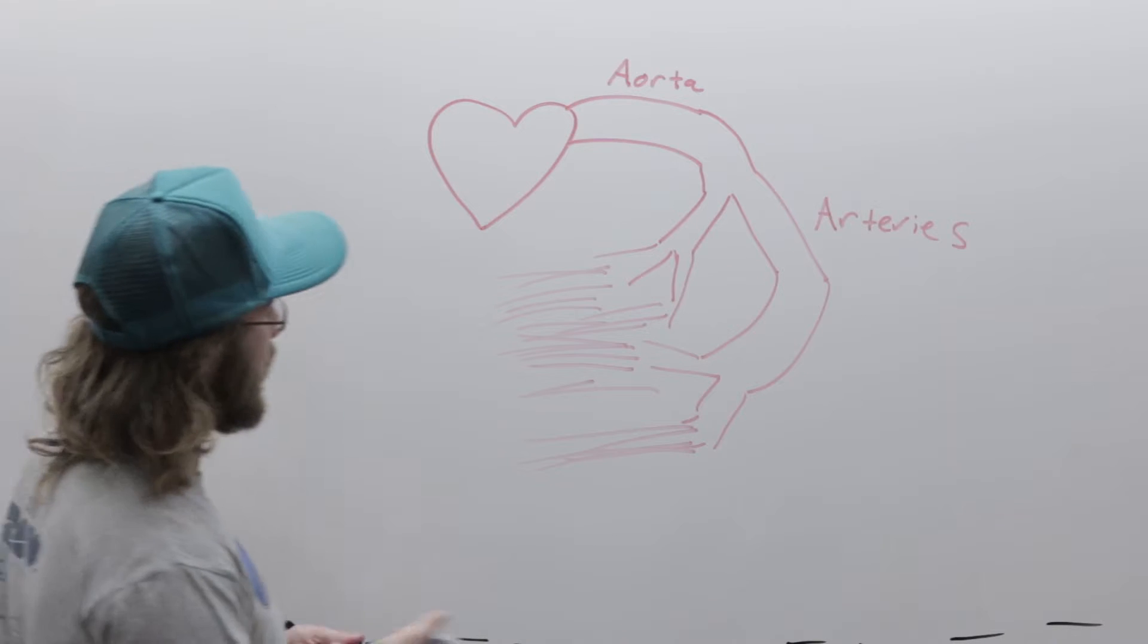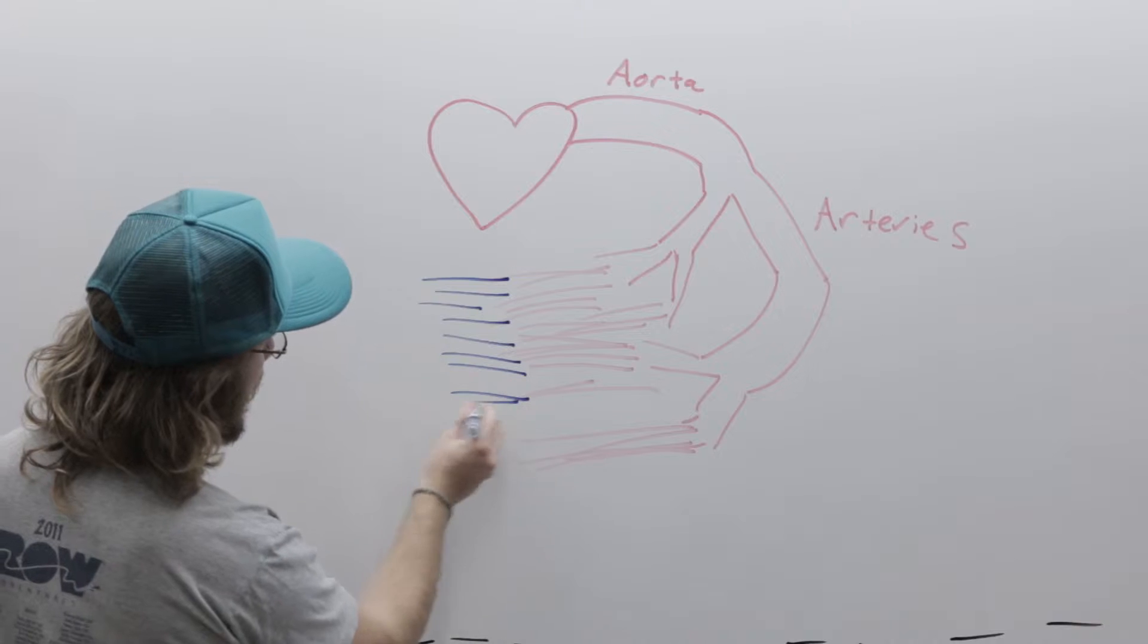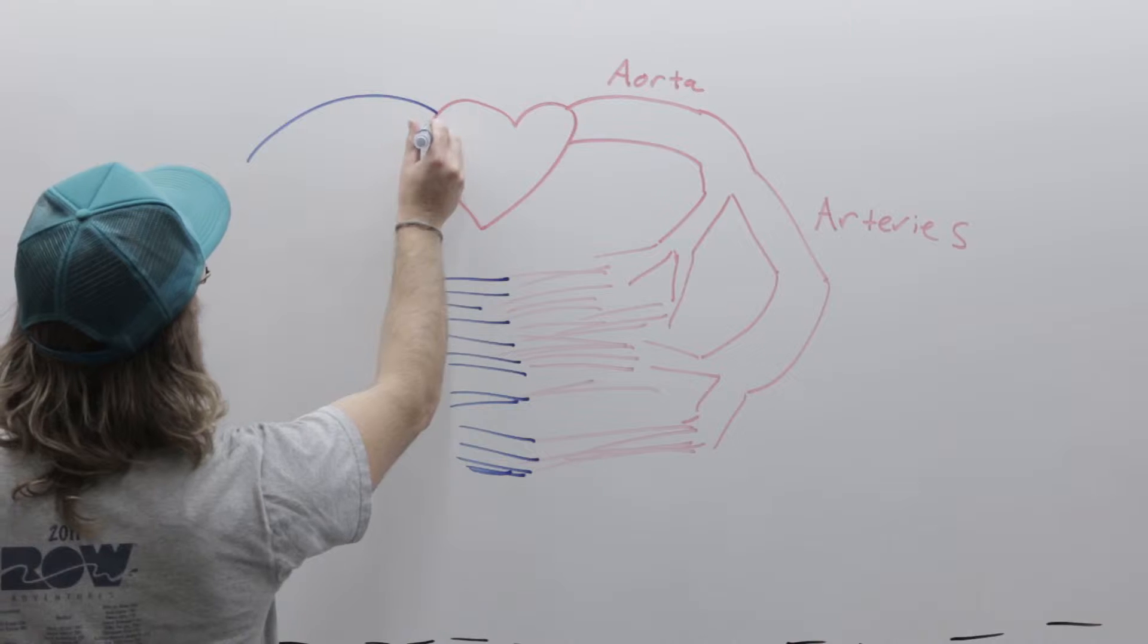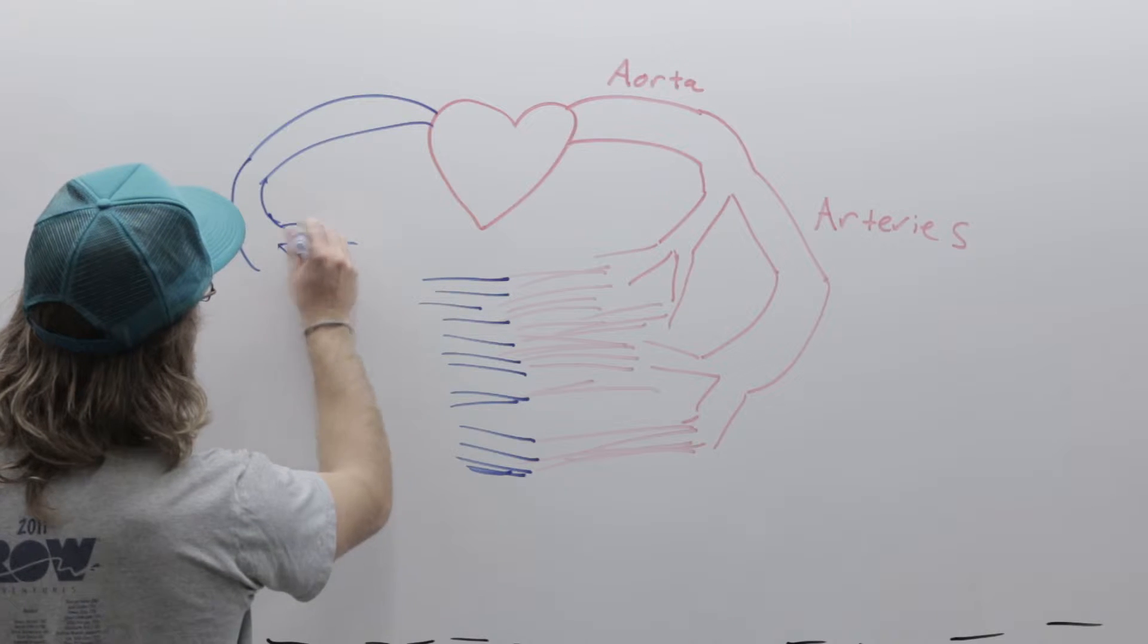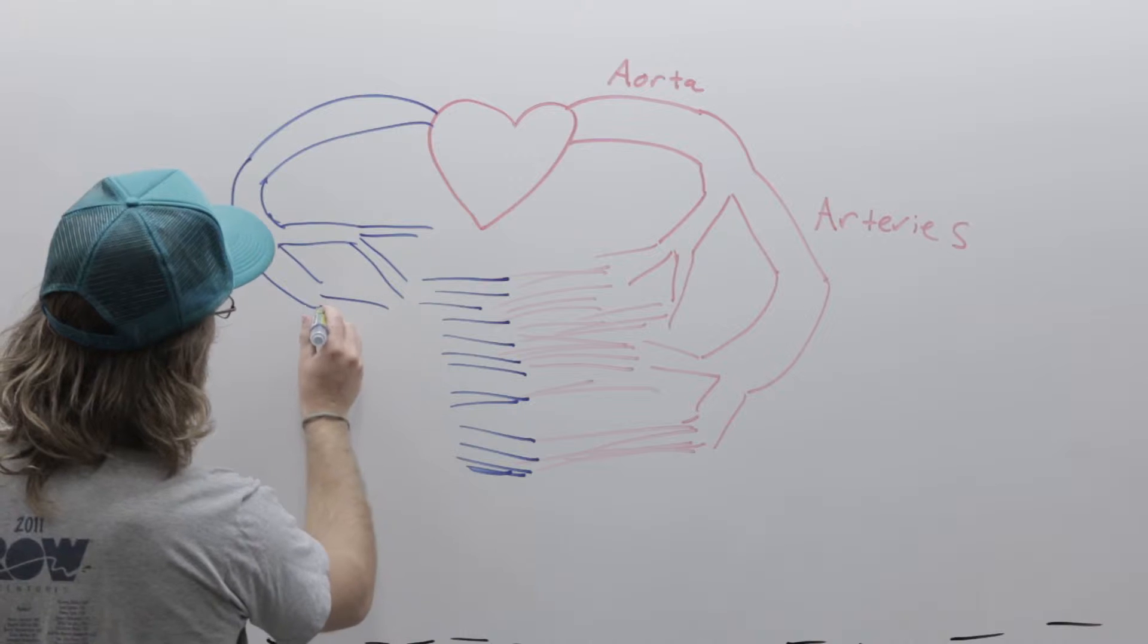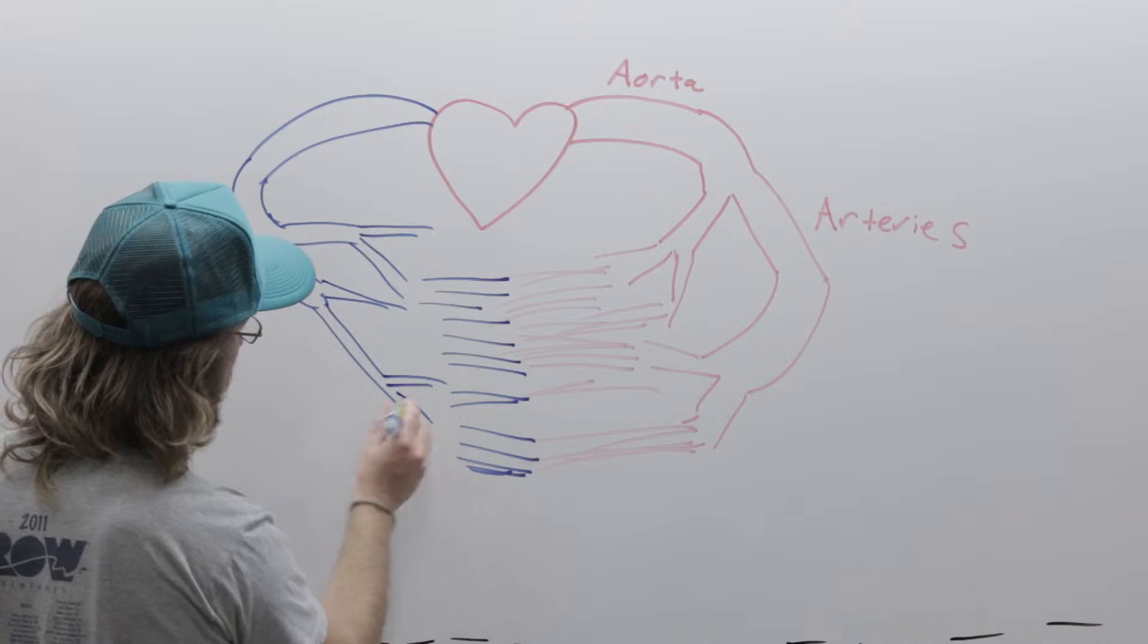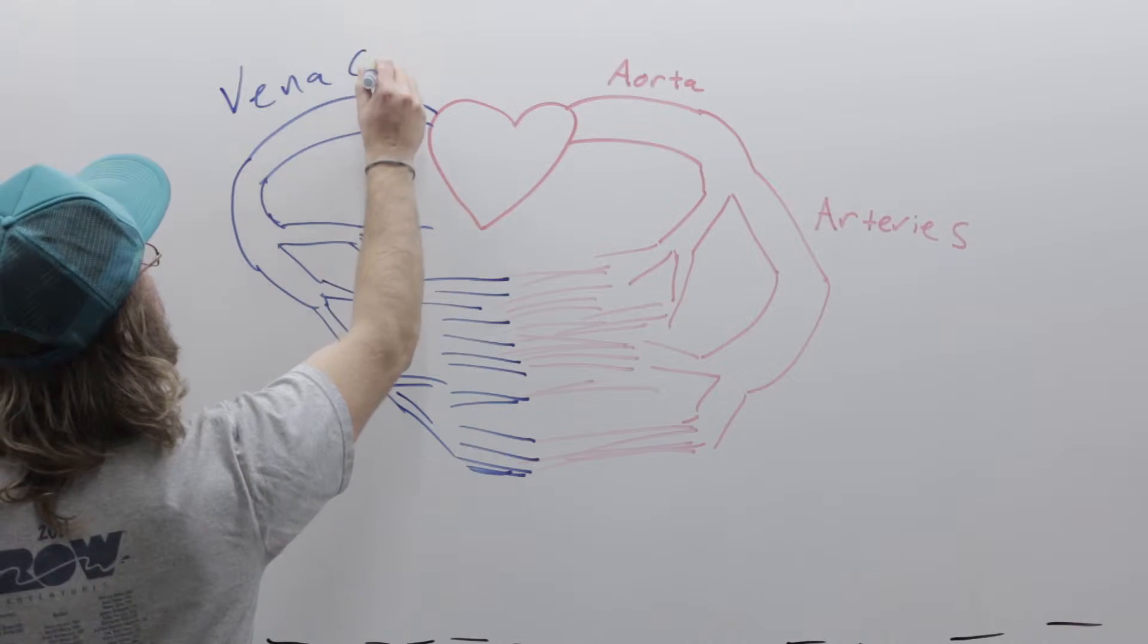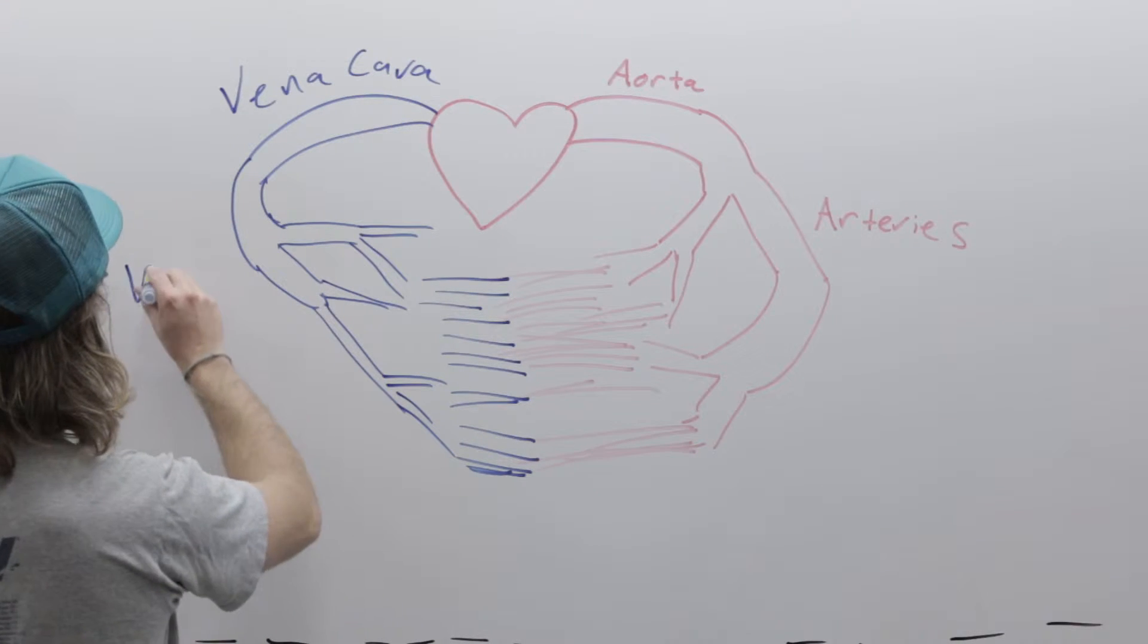And the blood gets deoxygenated, and we have the opposite coming out the other side. Here we have the vena cava, and here we have veins.